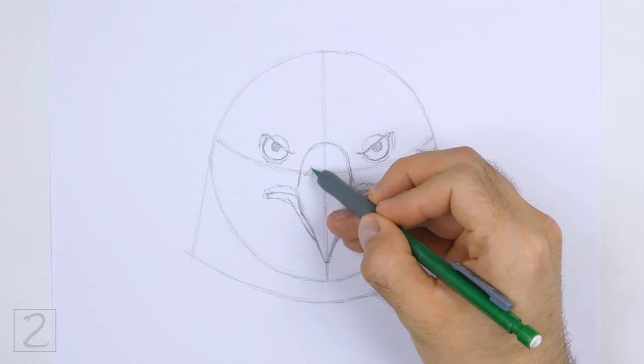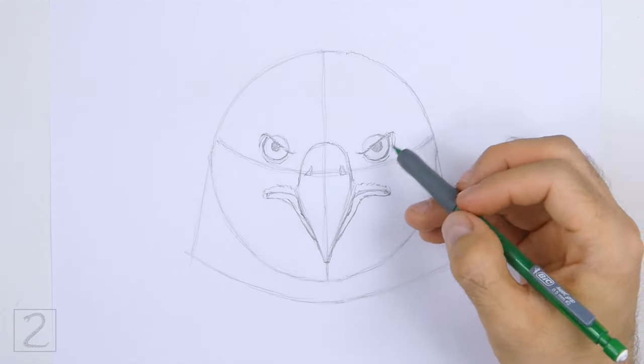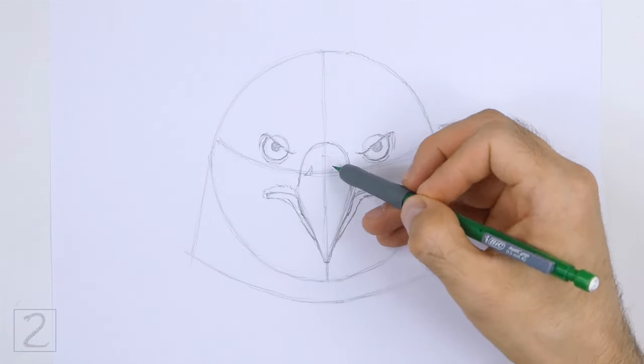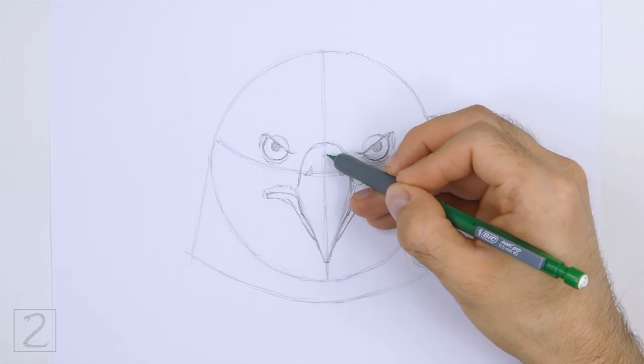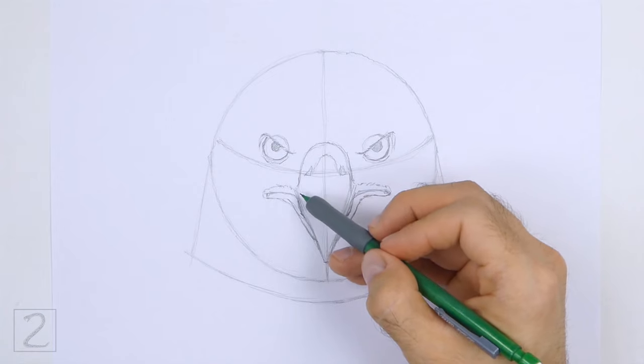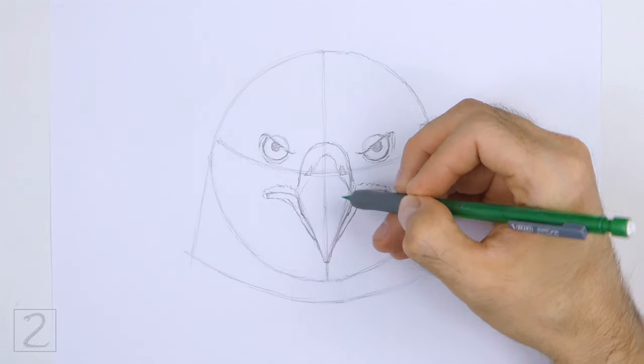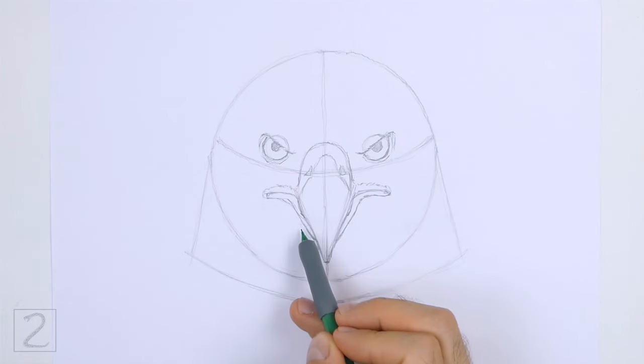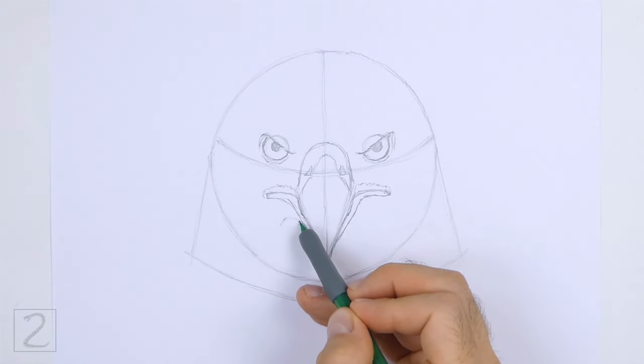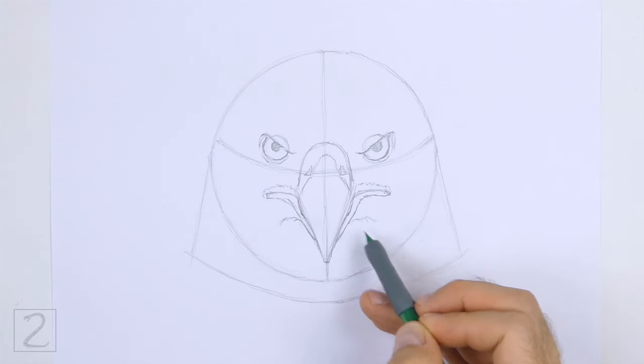Inside the top part of the beak, draw two small triangular shapes for the nostrils. Draw the nostrils along the path of the horizontal guide. Draw a curved line along the top part of the beak for a crease. Near the bottom of the shape, draw a couple of curved lines for the base of the beak. Use short strokes to draw these lines for a feathery texture.